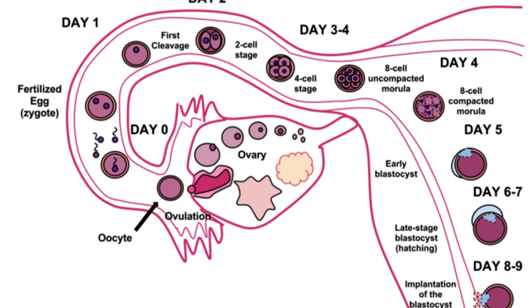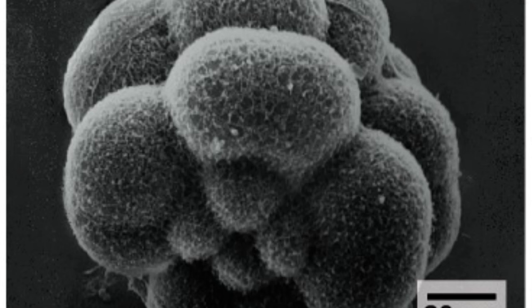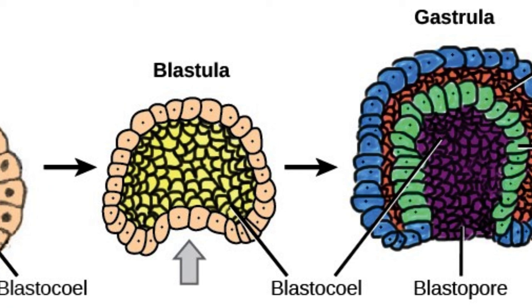Days 1–7: Fertilization occurs in the fallopian tube but the baby will live in the womb, implying it has to travel from the tube to the womb. This journey takes about 7 days. During this journey, it grows rapidly by dividing many times into multiple cells until it looks like a small ball called a morula. This small ball-like baby then forms a cyst called a blastocyst.